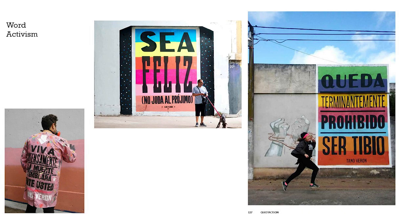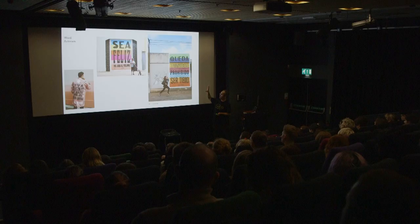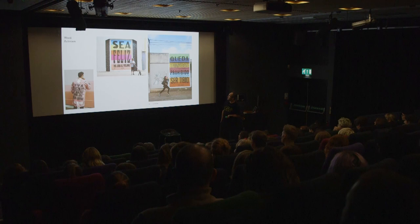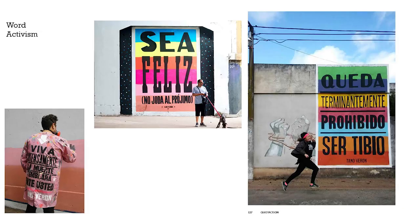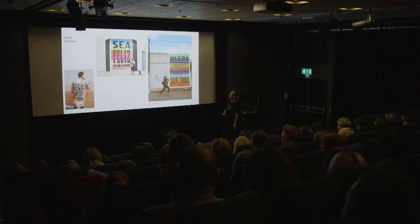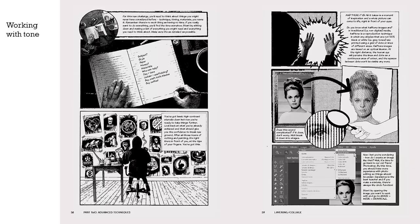He's been doing big blow-ups of these posters. What we wrote about is these messages and how they work. This message says 'it is strictly forbidden to be lukewarm' — it's playing with the idea of public messaging. Another thing in the book is using tone — teaching people how to create varied tone effects and hand-cutting them. There's an artist playing around with tone to make images, and another using tone to make CMYK printing with full stencils to create a full color result.